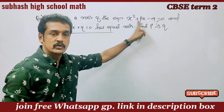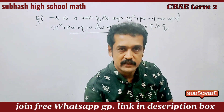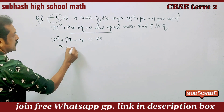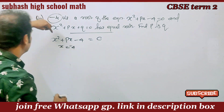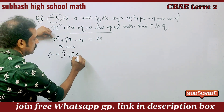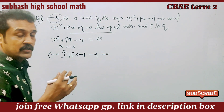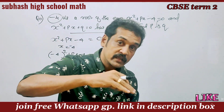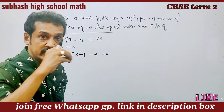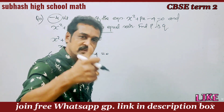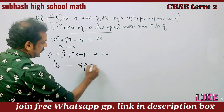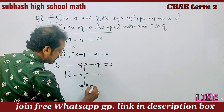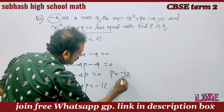First condition: minus 4 is the root of the quadratic equation x squared plus px minus 4 equal to 0. Substituting x = -4: 16 minus 4p minus 4 equals 0, which gives 12 minus 4p equals 0, so minus 4p equals minus 12, and p is equal to minus 12 divided by minus 4. The answer is p = 3.